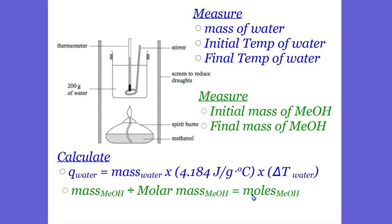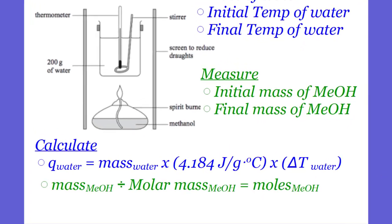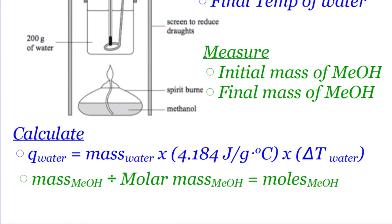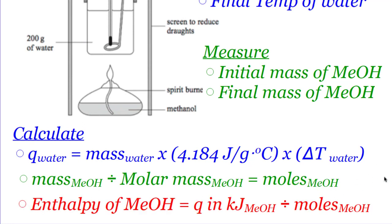At the end of the day, because of conservation of energy, the heat the water absorbed is the exact same heat the methanol gave off. Take that heat — Q in kilojoules of the methanol, which equals the Q of the water if all heat is transferred — and divide by the moles of the methanol. That gives you the enthalpy, the delta H, of the methanol.